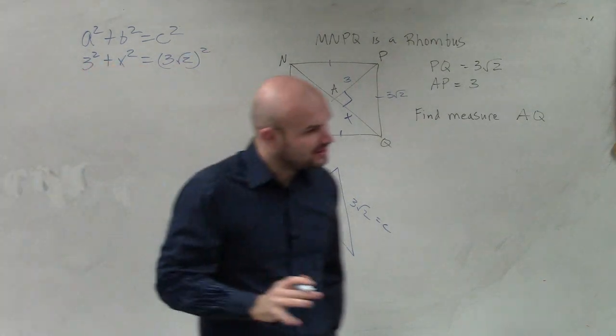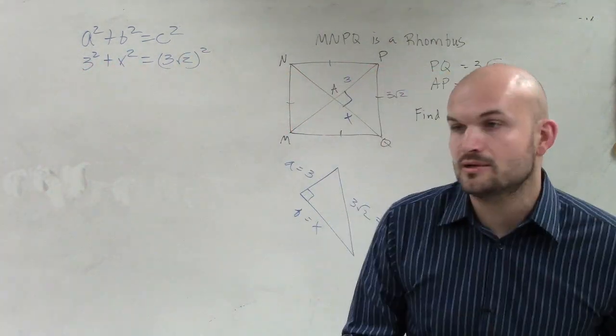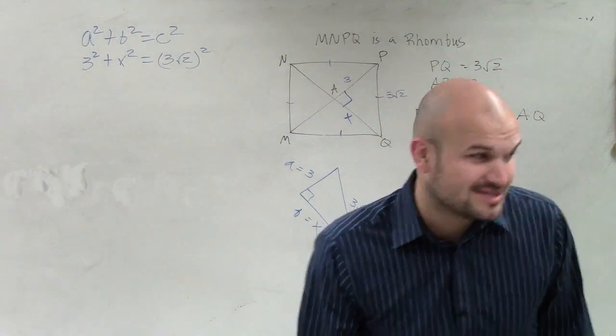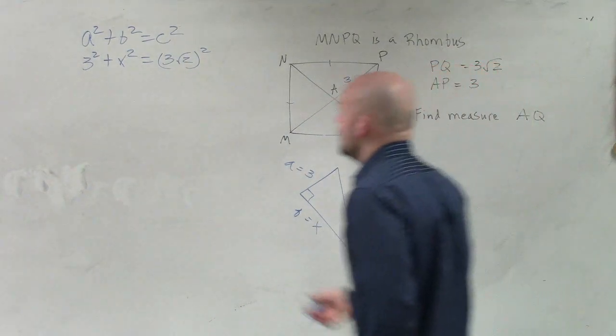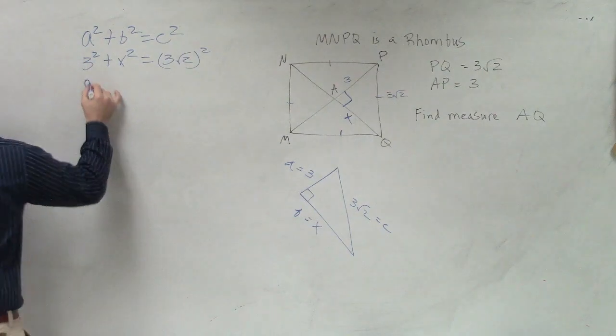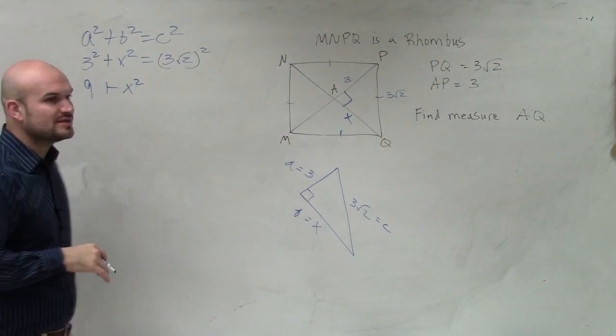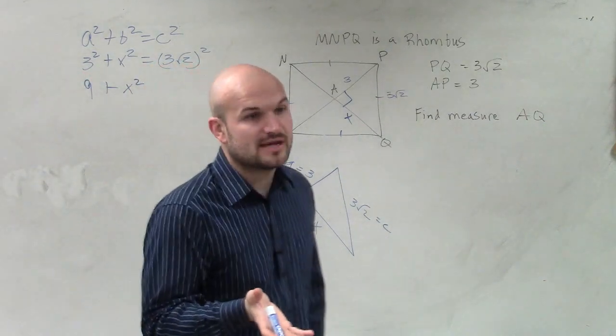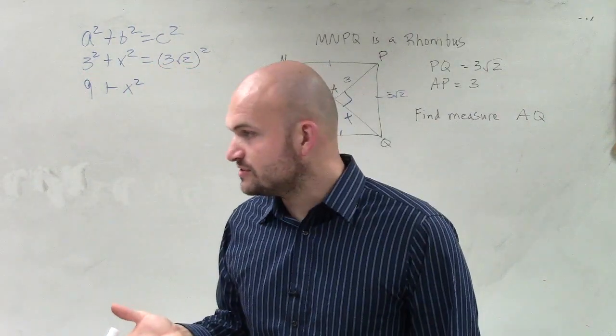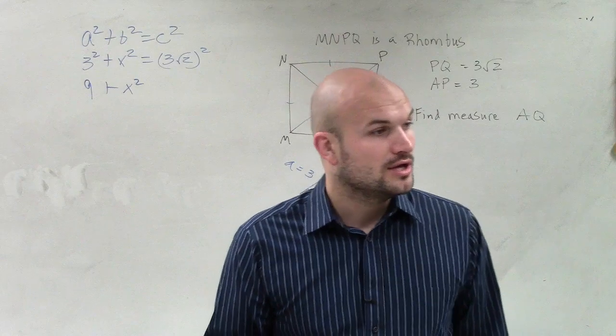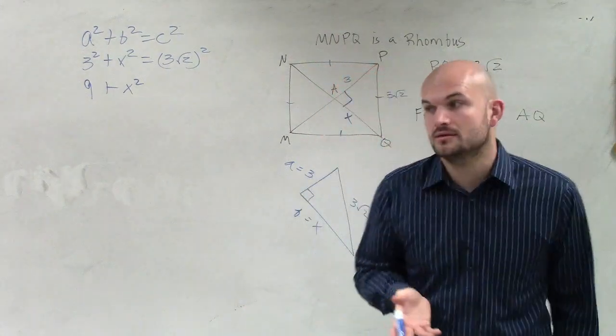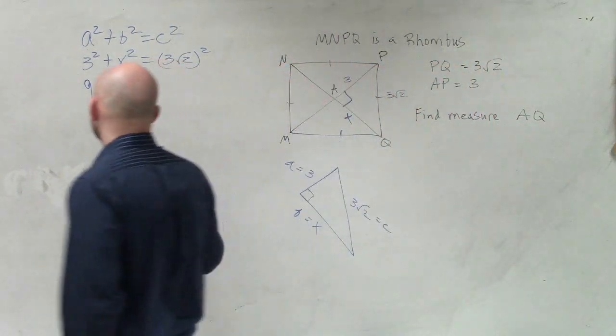Now, I know we haven't dealt a lot with the radicals. So I can fully understand if you guys had some problems with this. But you guys have been introduced to radicals before. 3 squared is going to equal 9 plus x squared. 3 times square root of 2 times 3 square root of 2. Well, square root of 2 times square root of 2 is square root of 2 squared, which is just going to be 2. 3 times 3 is going to be 9. 9 times 2 will be 18.